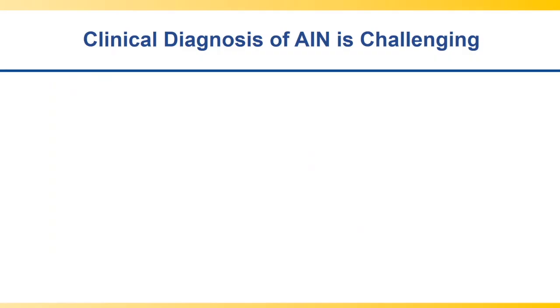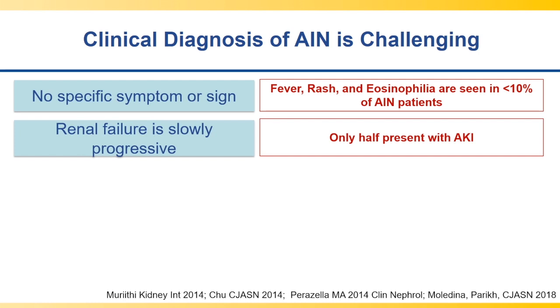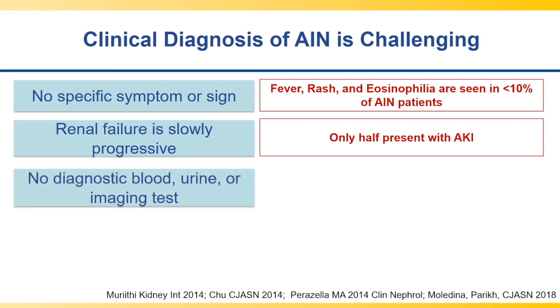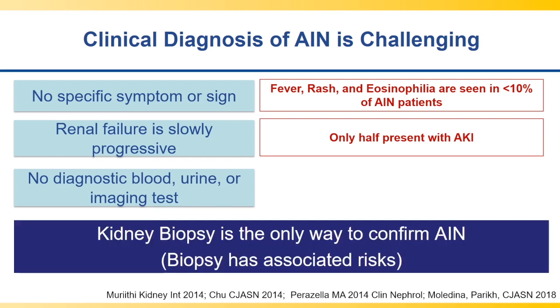However, the diagnosis of AIN is very challenging. There is no specific symptom or sign. Renal failure is slowly progressive and the clinical diagnosis is very difficult — only half the patients present with acute increase in serum creatinine. There is no clinical test that would differentiate AIN from other causes of acute kidney injury, and the kidney biopsy, which is the gold standard, has associated risks such as bleeding and is not feasible in many patients.